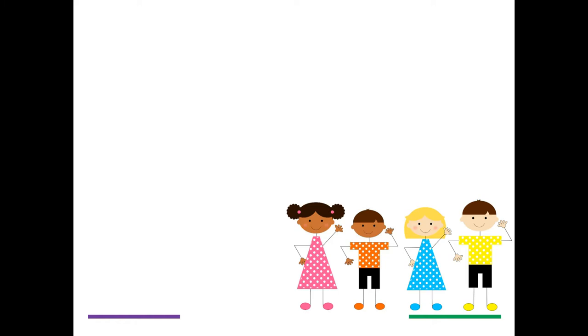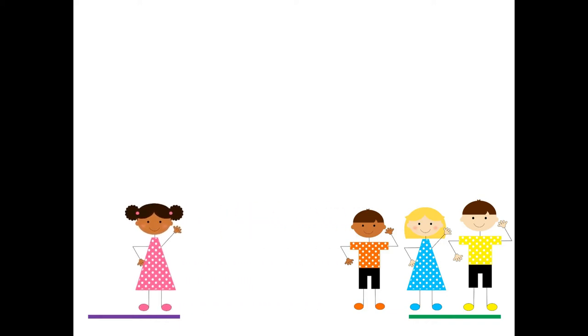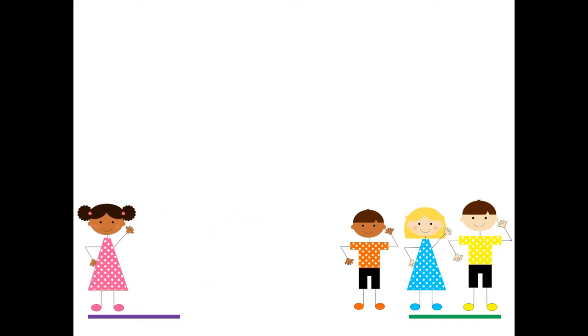So here are four children standing up in front of their classroom and the first student is going to take two big giant steps away from the other students. Then how many students are on her side of the room?